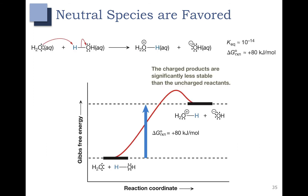One of the things that you may have noticed as we are talking about acid-base reactions is that neutral species are favored. So water would not react with water to form H3O+, or hydronium, and hydroxide. This just wouldn't happen. And you can see that we're looking at the Keq for this reaction, and the Keq is very small.